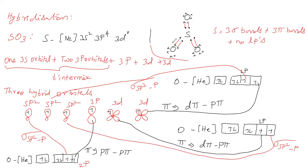The hybridization of sulfur in SO₃ is sp². The shape is trigonal planar with a bond angle of 120 degrees.